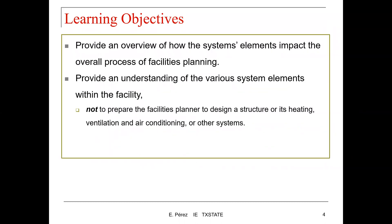The learning objectives for this lecture are to provide an overview of how the systems elements impact the overall process of facilities planning. We also want to provide an understanding of the various systems elements within the facility — not to prepare the facilities planner to design a structure for its heating, ventilation, and air conditioning or other systems, but we need to have an understanding of how those decisions are made in terms of the capabilities of those systems for a facility.